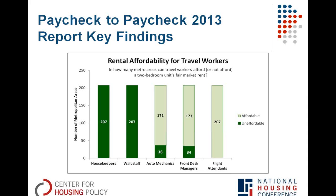Some of these workers may not need a two-bedroom apartment — they may have no dependents. So we also looked at fair market rents for a one-bedroom apartment. Housekeepers could afford a typical one-bedroom apartment in only 17 out of 207 metro areas, and waitstaff could afford a typical one-bedroom in just 27 metros. The median incomes range from less than $20,000 a year to the mid-high $20,000 mark. This clearly shows that having a full-time job is no guarantee of making rent.